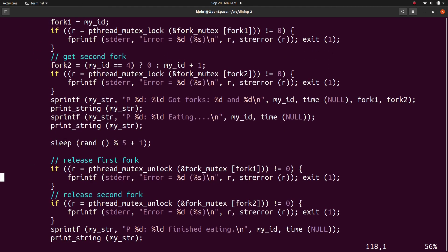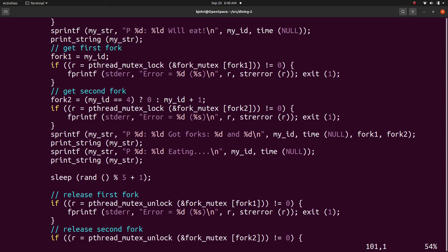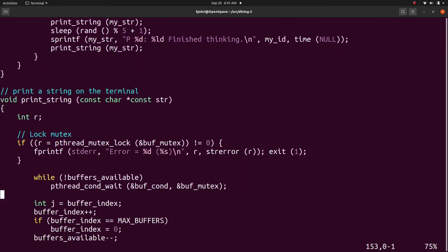Actually there is no contention for forks. Since only one philosopher is eating at a time, he or she always gets the forks, and fork mutex is really not necessary. You can get rid of fork mutex and replace fork mutex operations with simple printf statements. The rest of the code is same as in the earlier example.